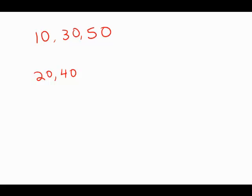First, let's find the average of 10, 30, and 50. When we add those three up, we get 90, and 90 divided by 3 is 30.